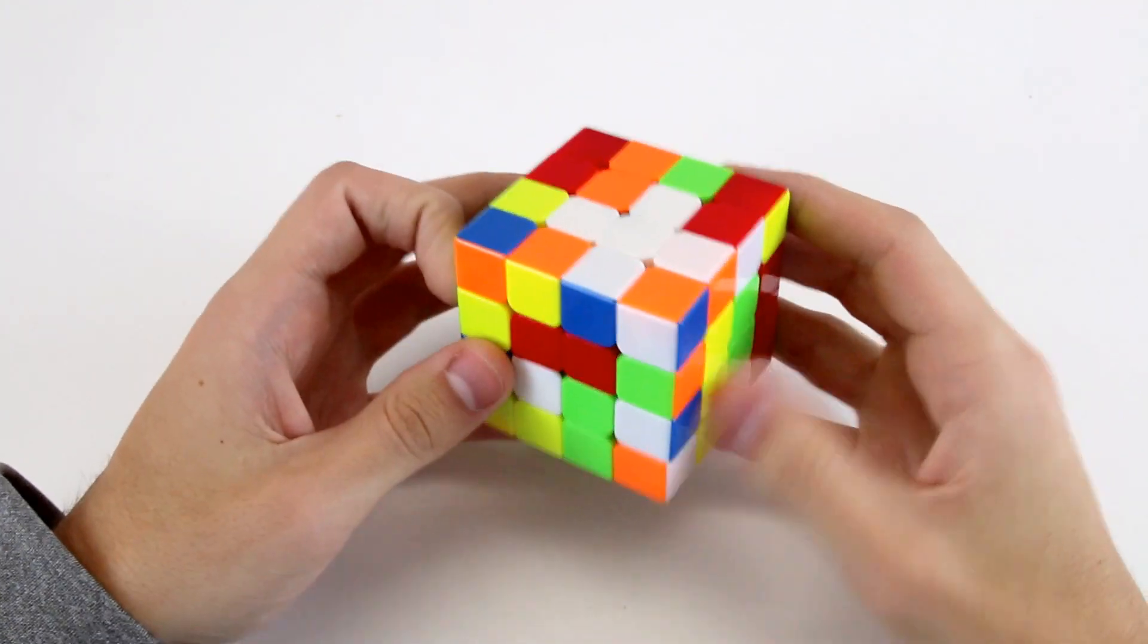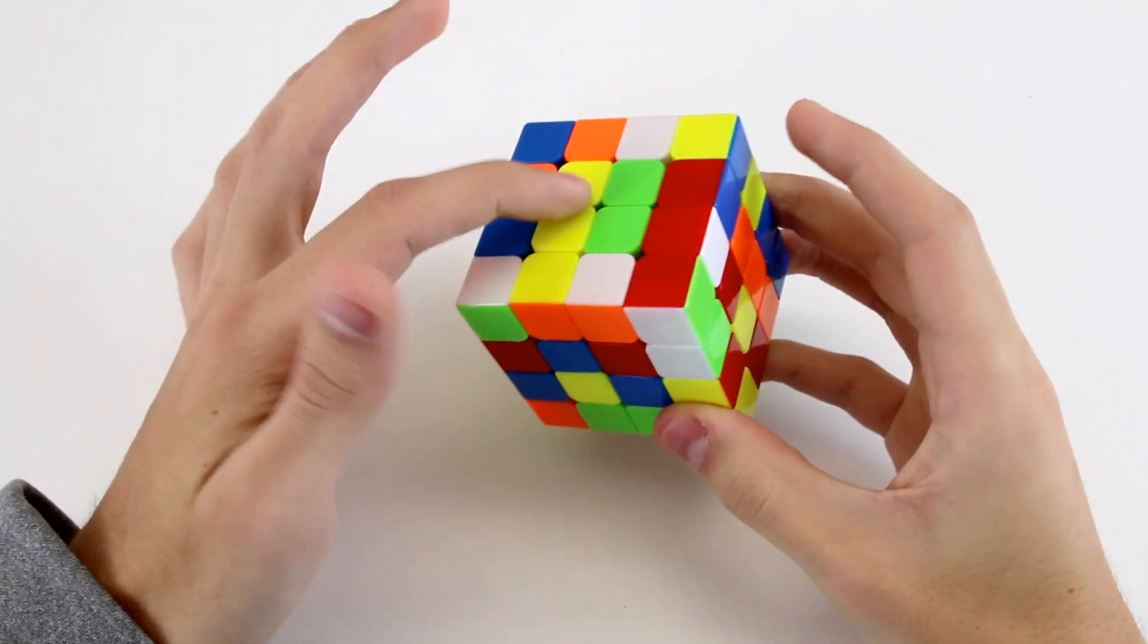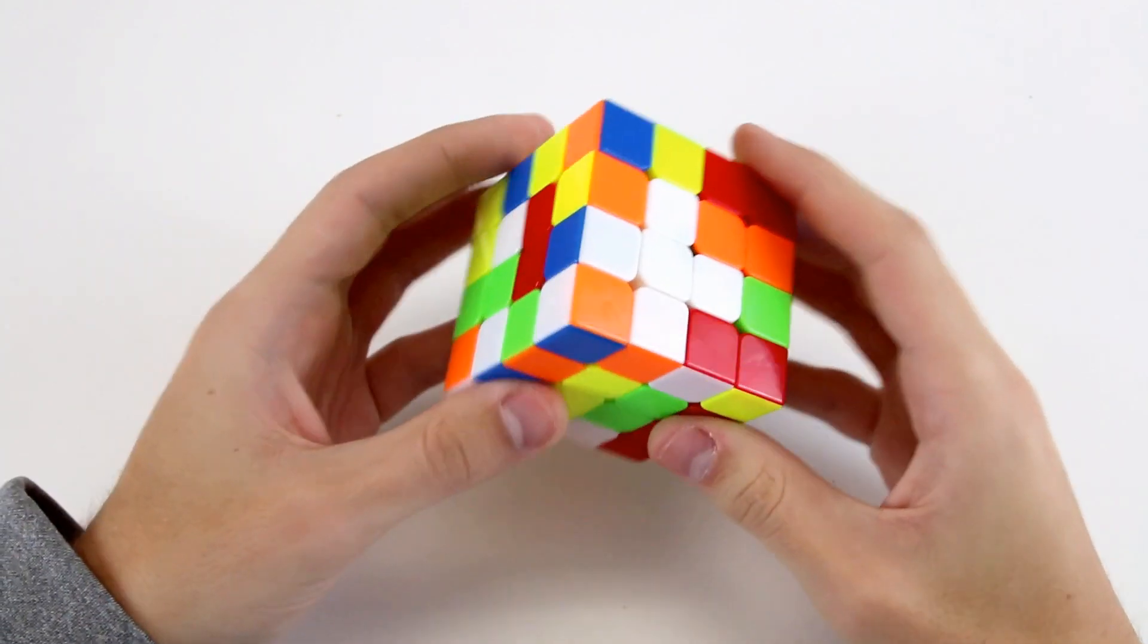Okay, this first solve is reasonably straightforward. We've got these three, or we can choose to do the yellow cross, the yellow center first, sorry.